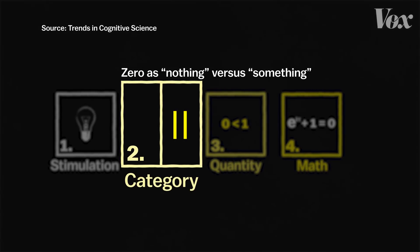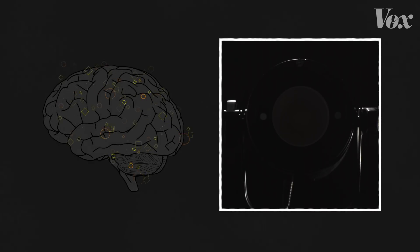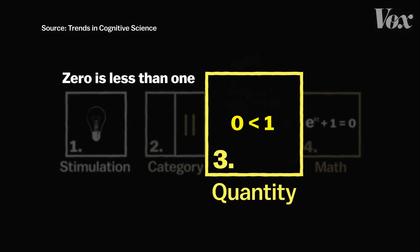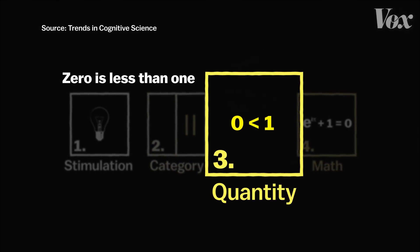So in the second stage, our brain has to learn how to react to nothing. The third stage is tougher: understanding that zero is less than one. And it's this stage that kids struggle with.